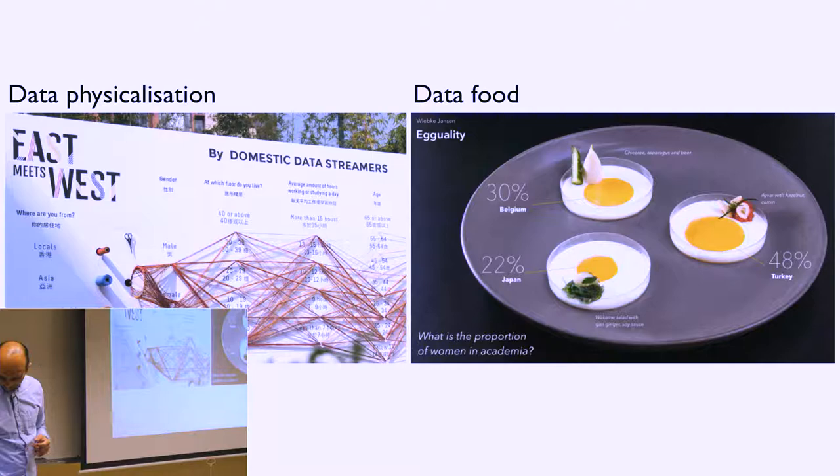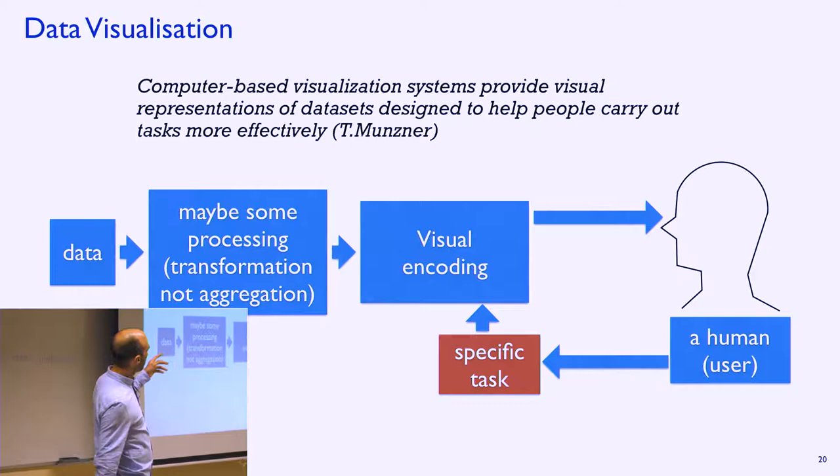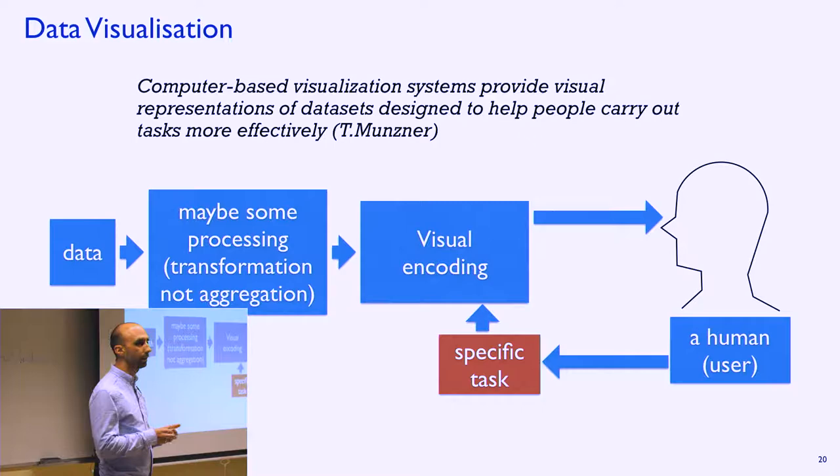So we are only going to see data visualization and information visualization, the first two parts. And this is a diagram that shows the process of creating data visualization. The important thing here is that the human needs to be at the center of the loop. We are designing for someone to execute a task, a certain task. And we have to keep that in mind, because it will tell us what kind of visualization we have to make, what kind of design decisions we have to take, and so on.